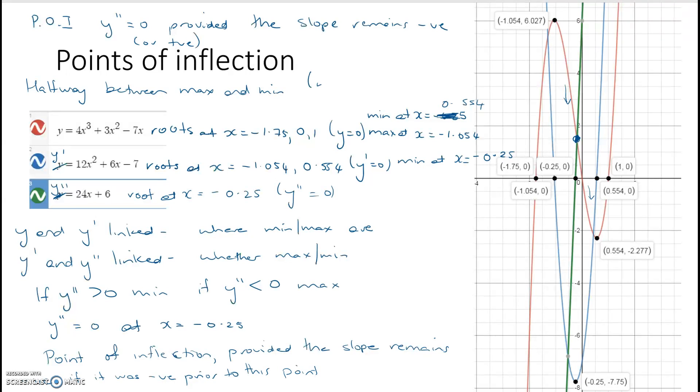So, if it's a nice function. So, in this case, it's going to be halfway between negative 1.054 and 0.554, and then add them together, find that actually x is negative 0.25, and then find the y value.